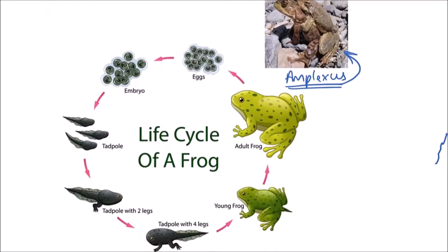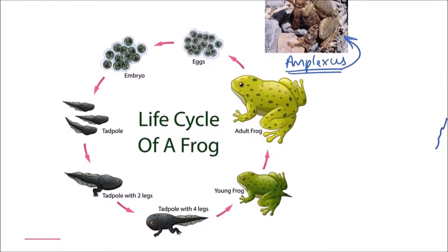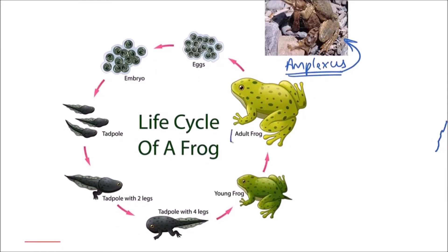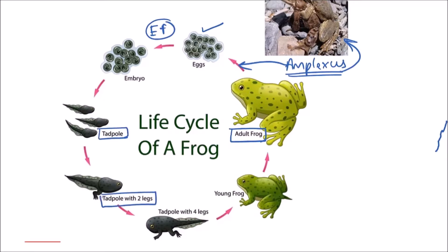Both male and female frogs release their gametes into the water for external fertilization. In the life cycle of a frog, the adult frogs perform amplexus, after which the eggs are released into the water. External fertilization occurs, and after fertilization embryos are formed, which then develop into tadpoles.